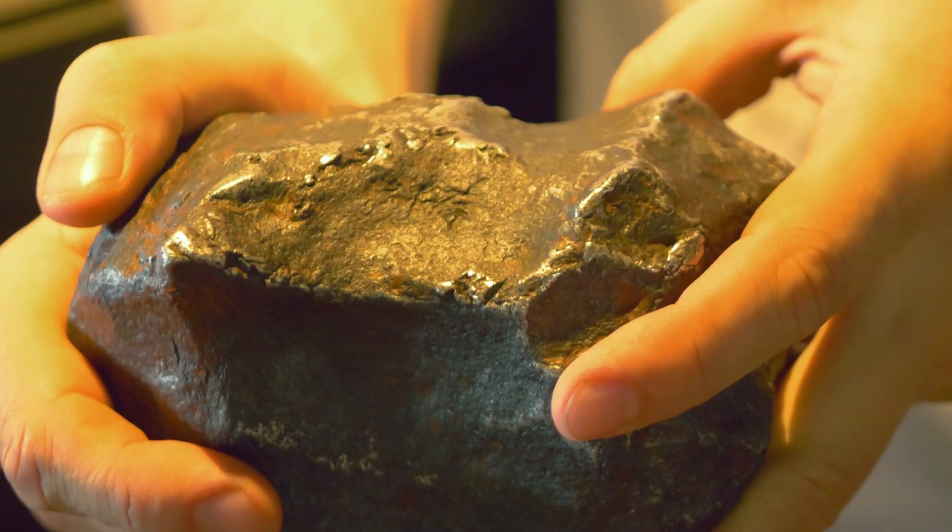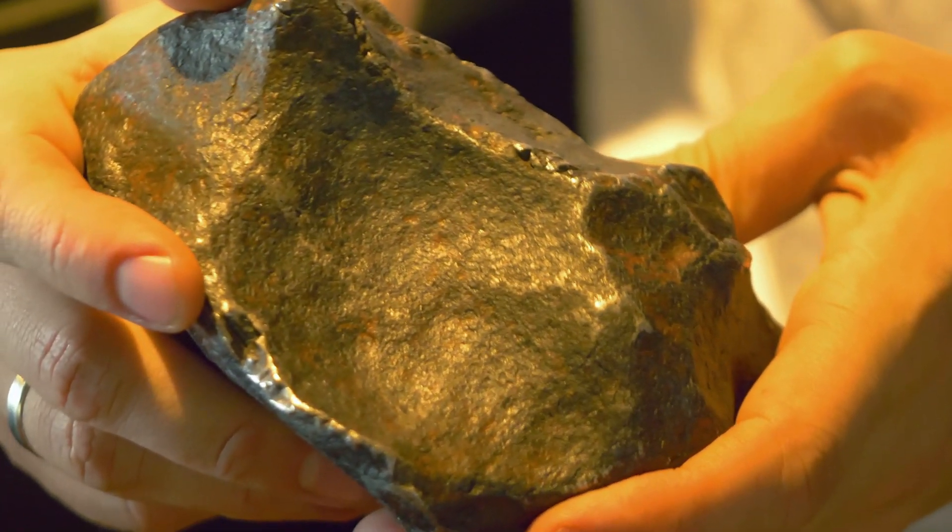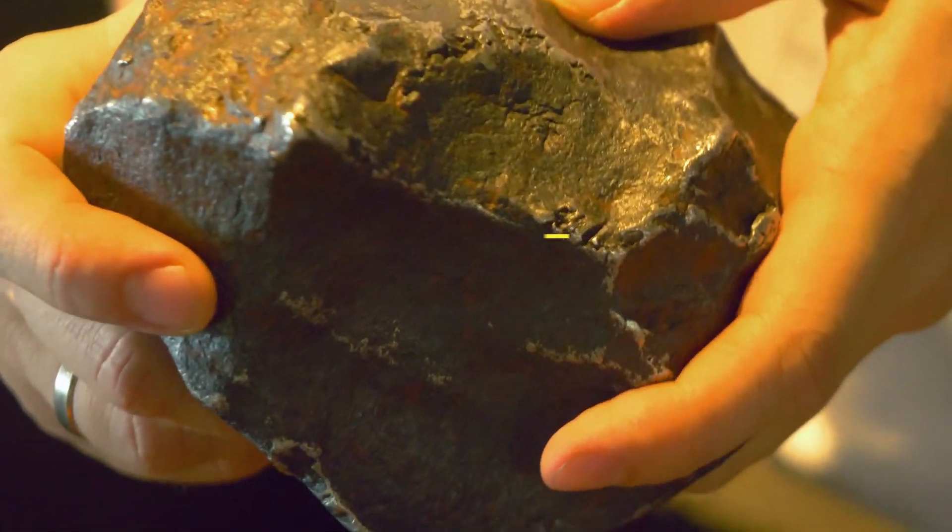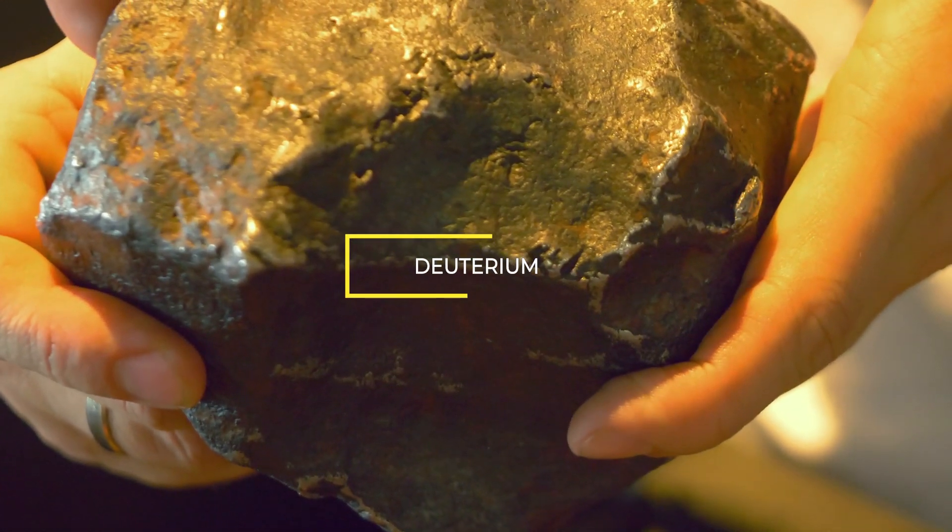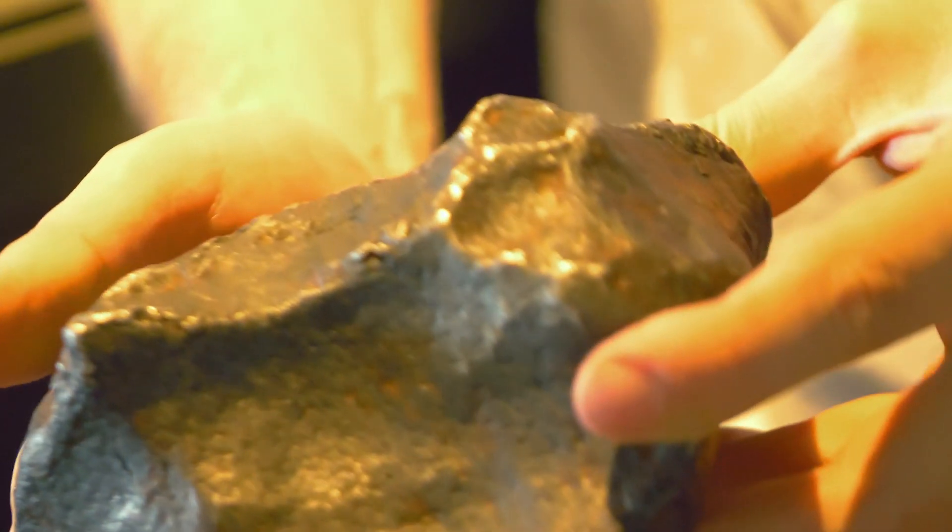In addition, the composition of the water in meteorites doesn't precisely match that of Earth's. The extraterrestrial version contains more deuterium, a heavier form of hydrogen, indicating that there must have been another source of the water on our planet.